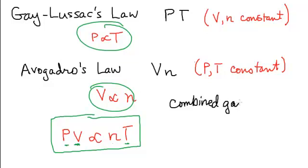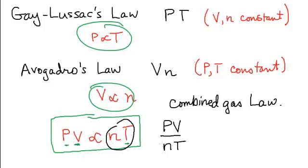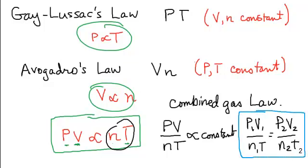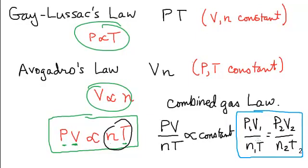The combined gas law looks at how all four variables — P, V, n, and T — change with respect to each other. We write it as PV/nT equals a constant, regardless of conditions. So if we have two sets of conditions, P₁V₁/n₁T₁ = P₂V₂/n₂T₂, where the subscripts represent different conditions of pressure, volume, moles, and temperature. This gives us a mathematical way to calculate one unknown variable if we know all the others.